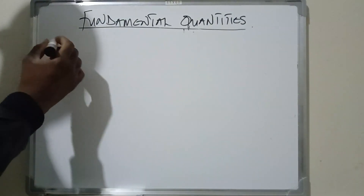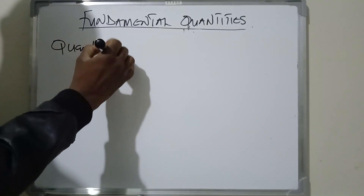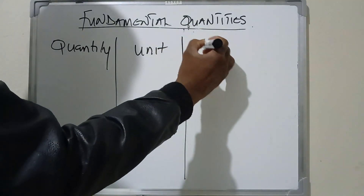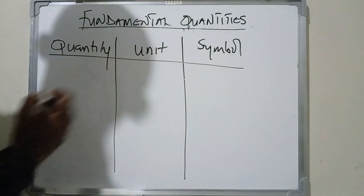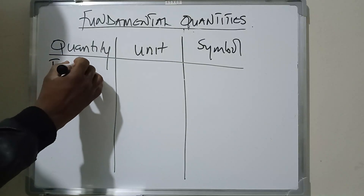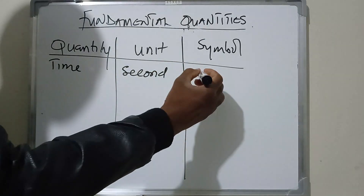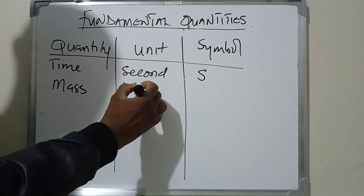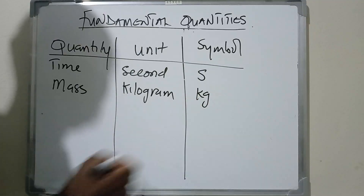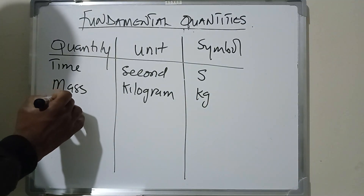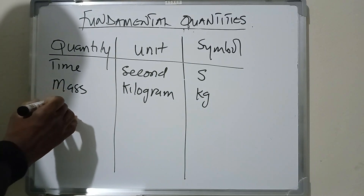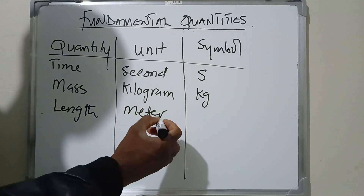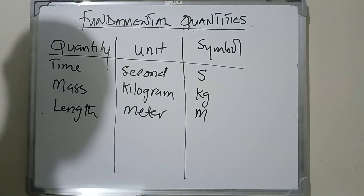The table has three columns: quantity, unit, and symbol. The first example is time — the unit is the second, the symbol is S, and you can use a stopwatch to measure it. Next is mass — the unit is the kilogram, and you can use a beam balance. Then we have length — the unit is meters, symbolized by M, and you can use a measuring tape.